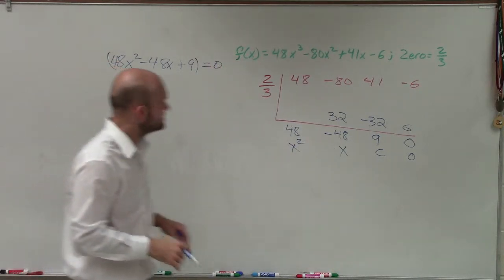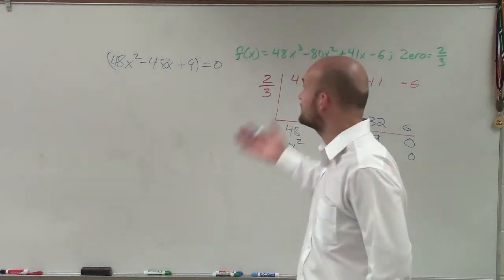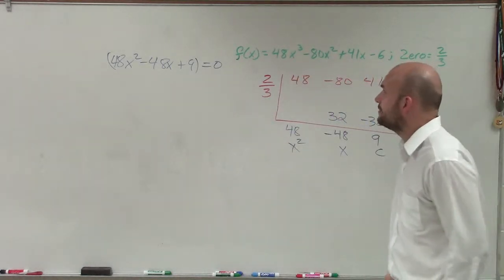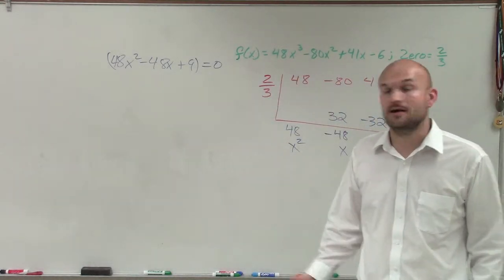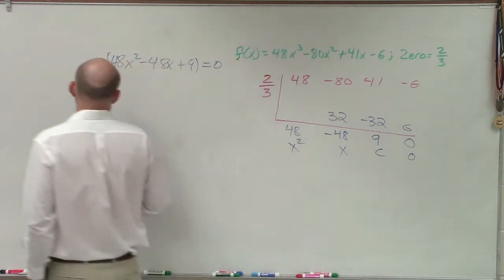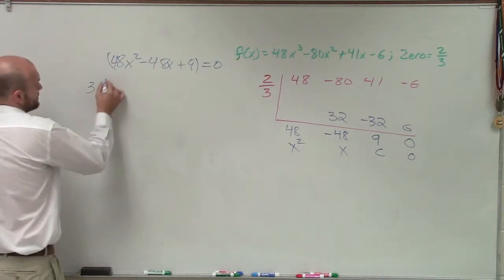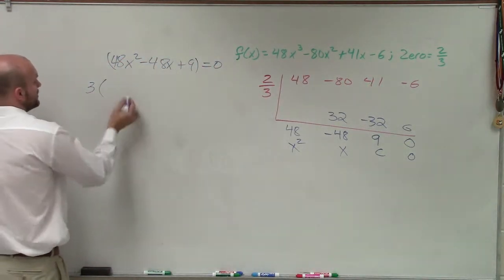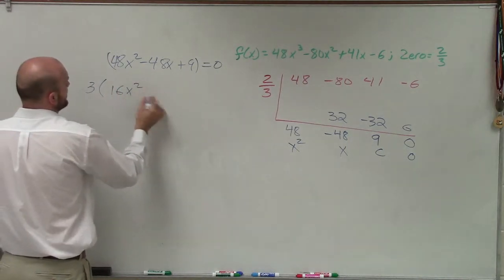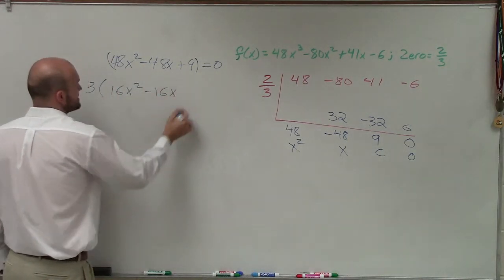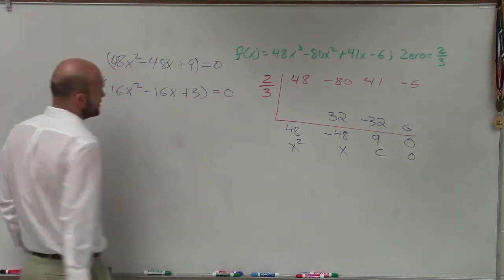Now I'm looking at this, I do know I need to see what I can factor out. Well, I can't factor out a 9, but I do see that I can factor out a 3. So by factoring out a 3, I am now left with 16x squared minus 16x plus 3 equals 0.